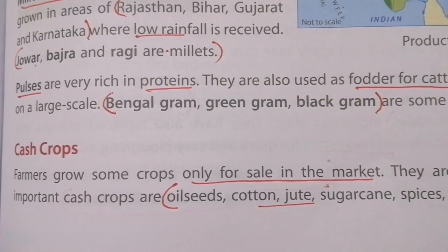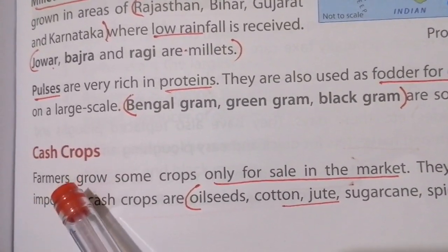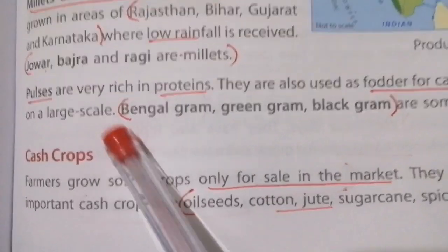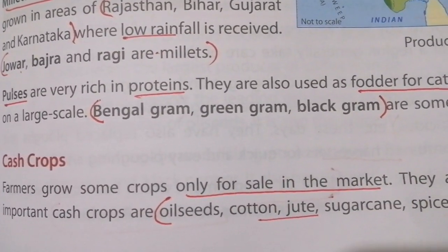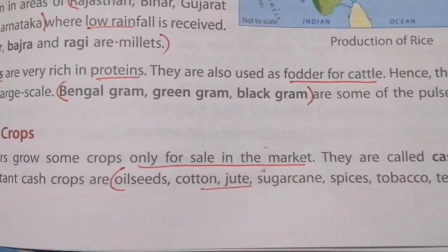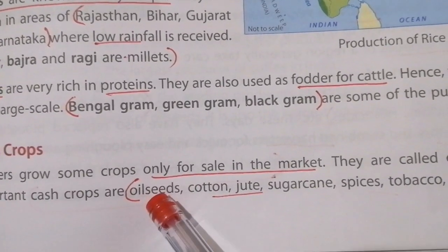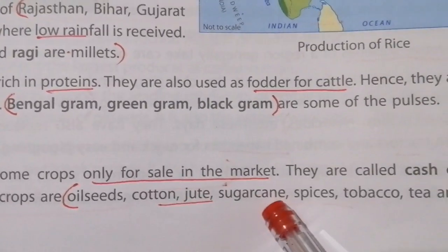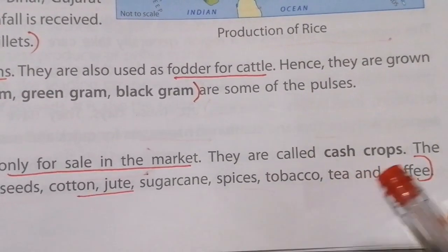Now we shall see about important cash crops. Farmers grow some crops only for sale in the market — these are called cash crops because when you sell them you get money. Examples of cash crops are oil seeds, cotton, jute, sugarcane, spices, tobacco, tea, and coffee.